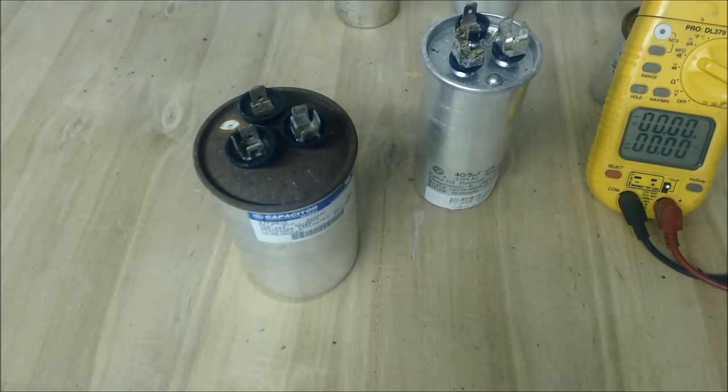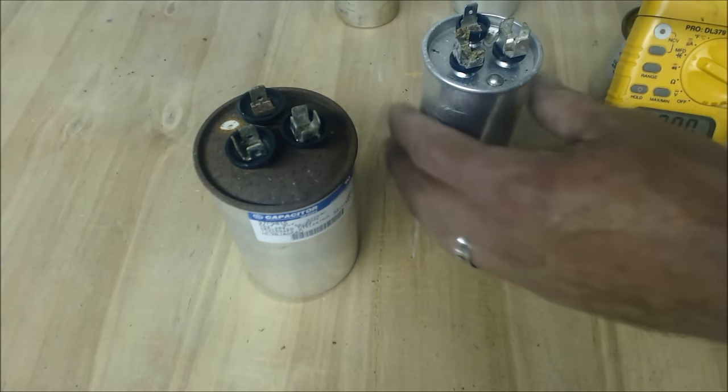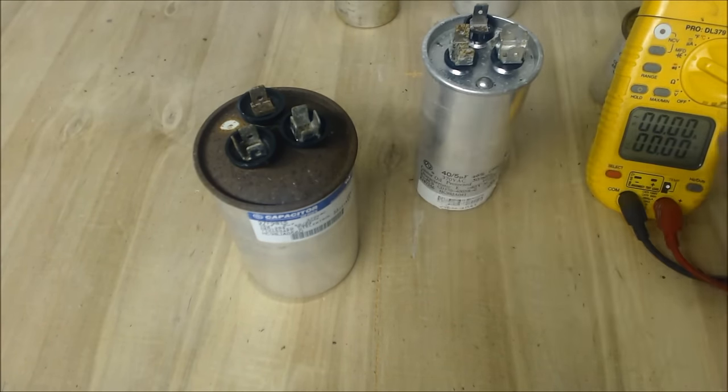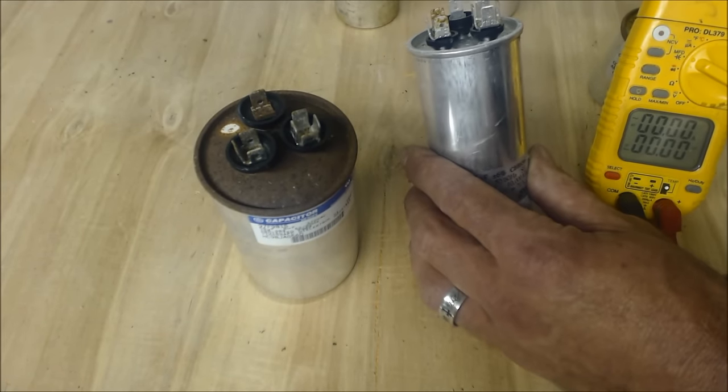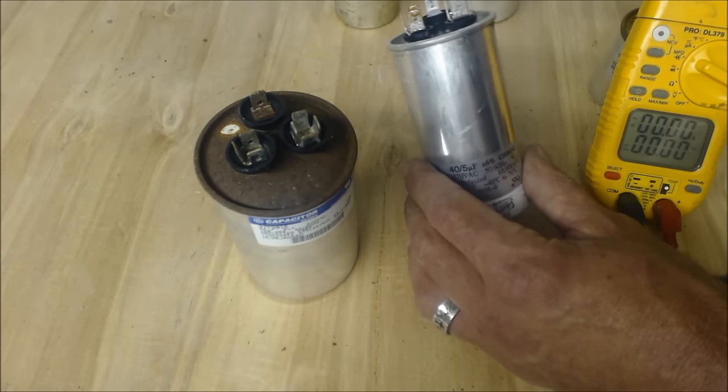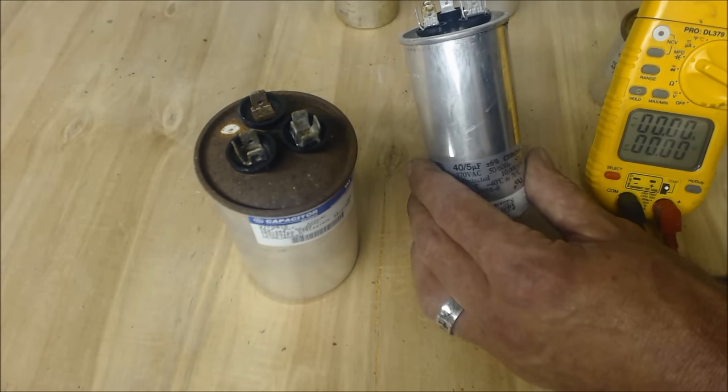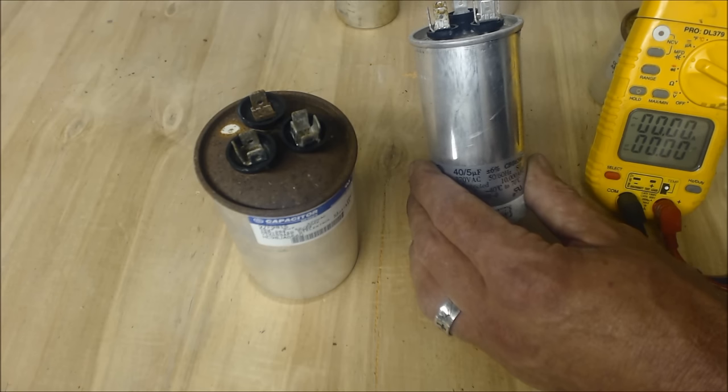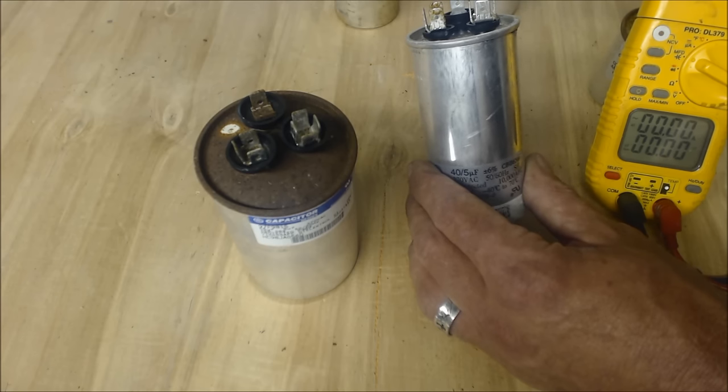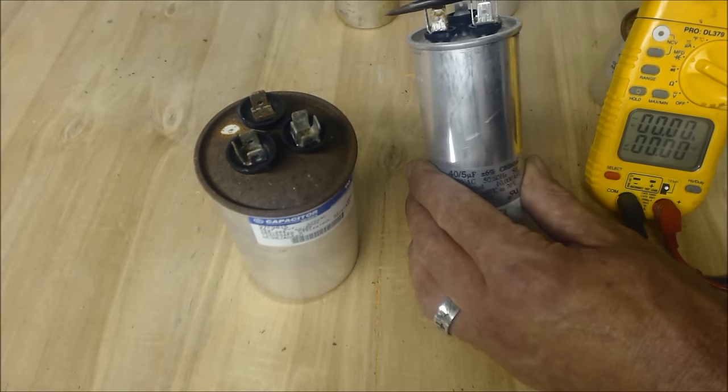Put your multimeter to MFD and you can short these out. You want to short it out, not necessarily to drain all the voltage out, because most of it should mainly be drained from the last time the unit was turned off. The compressor and fan will draw most of the voltage out already, but if there's just a little bit remaining, we're going to short that just to make sure we have an accurate measurement with our multimeter.